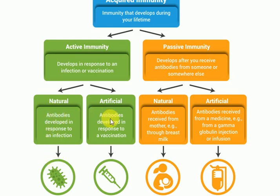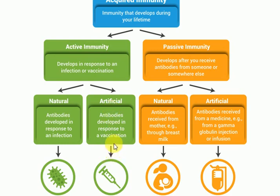Artificial active immunity is when antibodies are developed in response to a vaccination. The antibodies are produced against the antigen, but the antigen is introduced artificially. This is an example of artificial active immunity — it's not a natural one like measles.